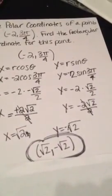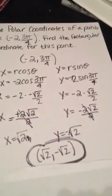So your final answer is square root of 2 and negative square root of 2.